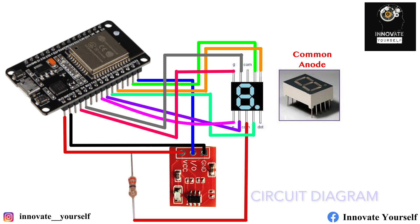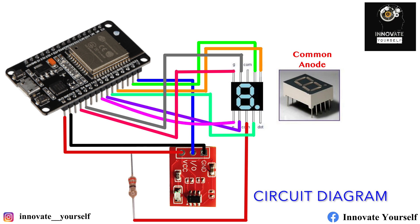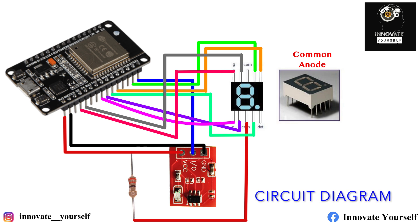Before we start with the coding, let's have a look at the connections between the ESP32, the seven segment display, and the touch sensor, so that we can accordingly write the code. This is the circuit diagram you can see on your screen, and you can also see the seven segment pinouts. I am using a common anode seven segment display in today's session.